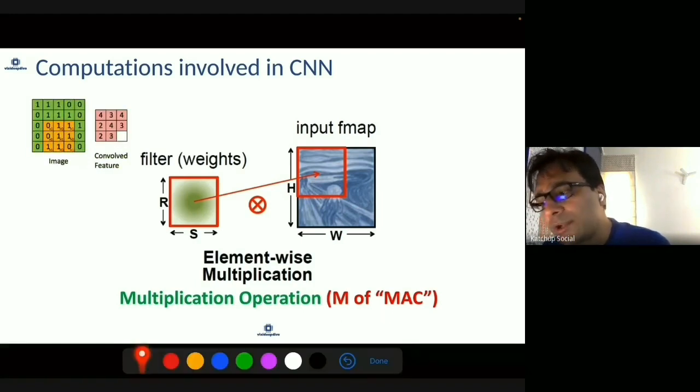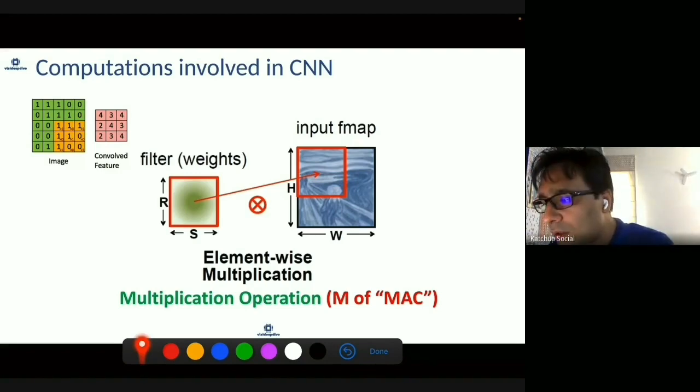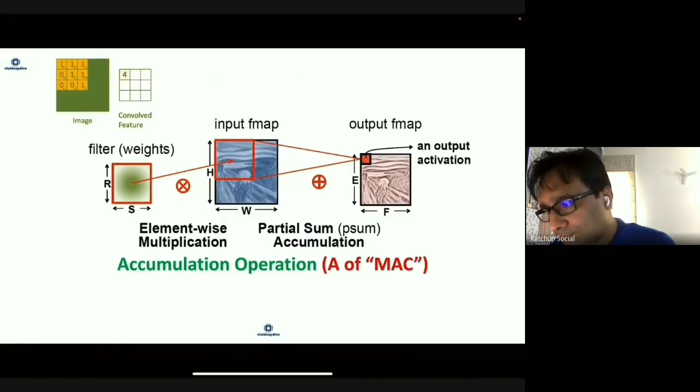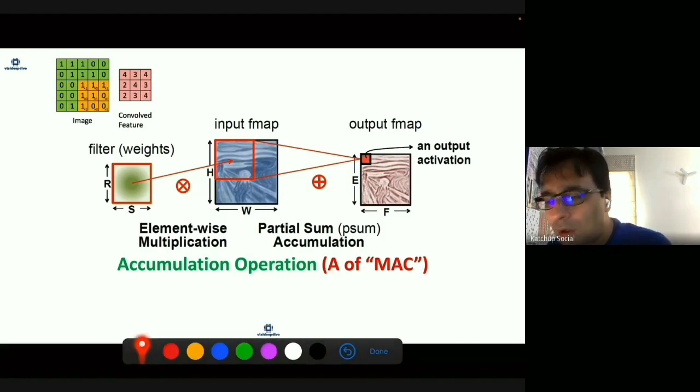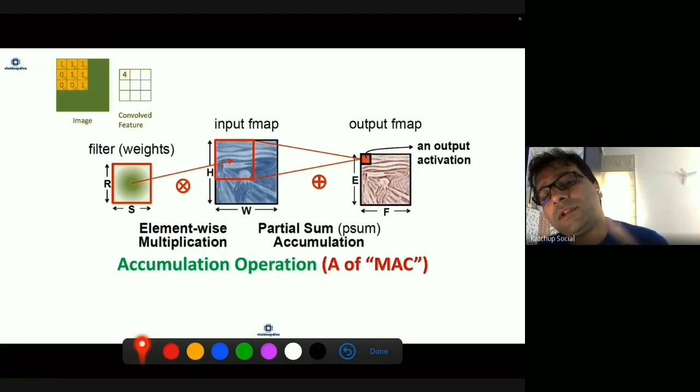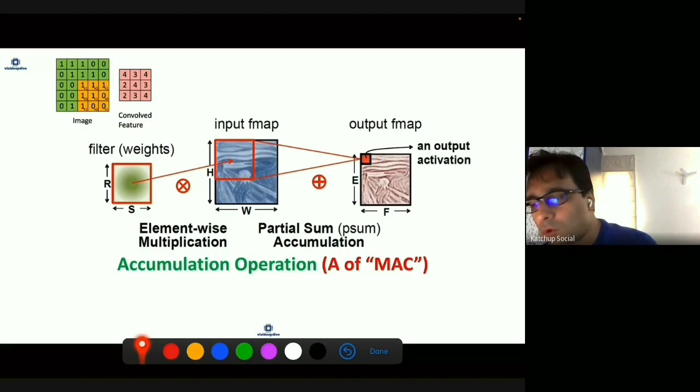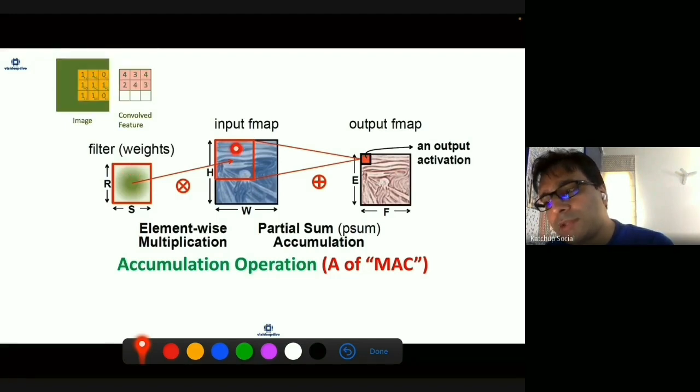To arrive at an output, you multiply first row first column, then add all those values - that is the addition. You have a previously stored value, and the new multiplication you just did gets added to the previous value to generate a new one. So to produce each output, you do multiplication and then addition.